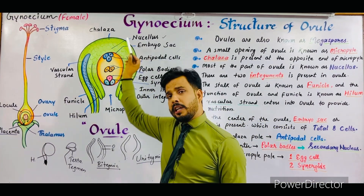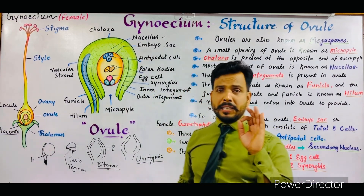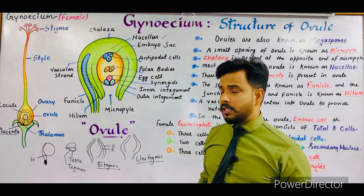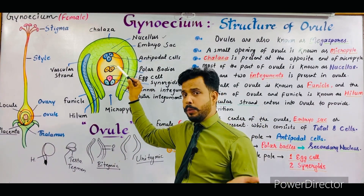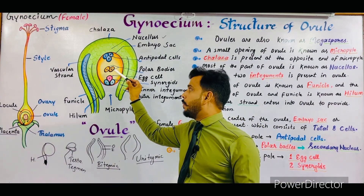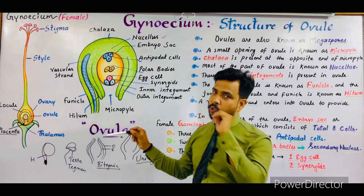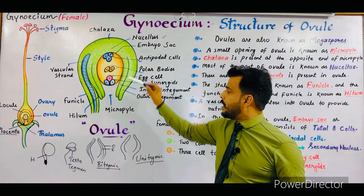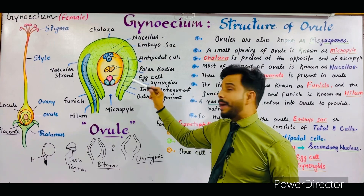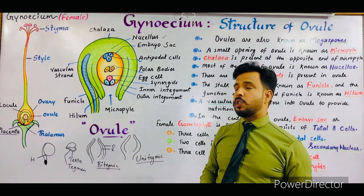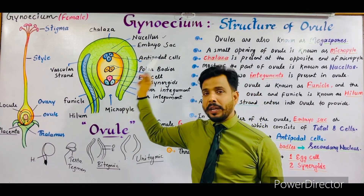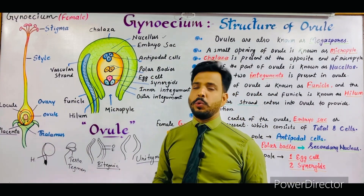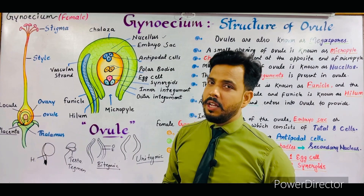To summarize the eight cells of the embryo sac: three cells at the chalaza pole are antipodal cells; two cells in the center are polar bodies; and three cells at the micropyle pole consist of two synergids and one egg cell.